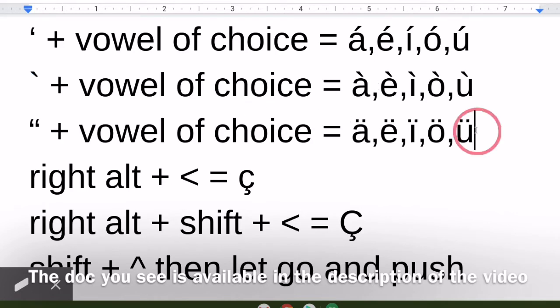If I want to get the diaresis over my vowel, I'll push apostrophe, I'm sorry, quotation mark, and then vowel of choice. And I'm going to do quotation marks, it's shift and then the quotation mark button, which is next to the enter key.